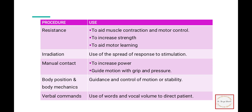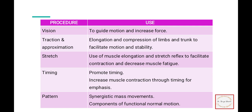This is the tabulated form of the procedure and the use of each facilitation technique. Resistance is used to increase strength, motor learning, and irradiation — to spread the response. Manual contact is to increase power and guide motion. Body position and mechanics are to guide and control motion and stability. Verbal command is to direct the patient. Vision is used to guide motion and increase force. Traction and approximation facilitate motion and stability. Stretch facilitates contraction and decreases muscle fatigue. Timing increases muscle contraction, and patterns are synergistic mass movements composed of functional normal motion.